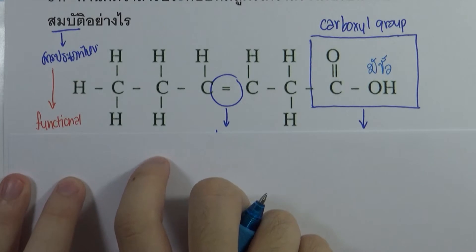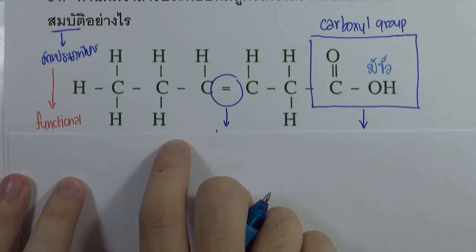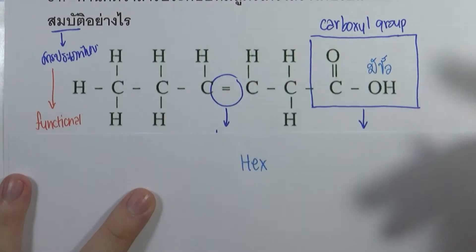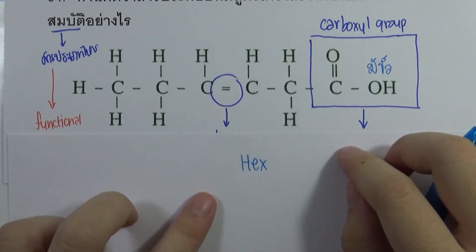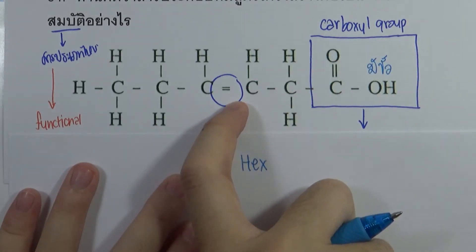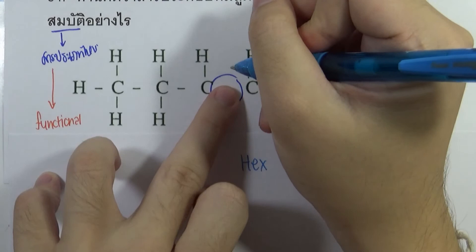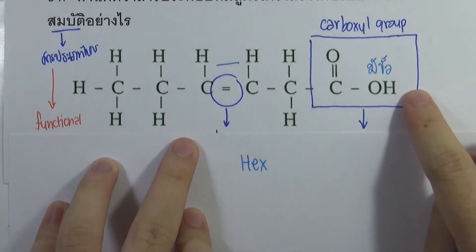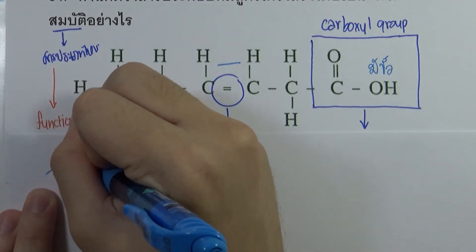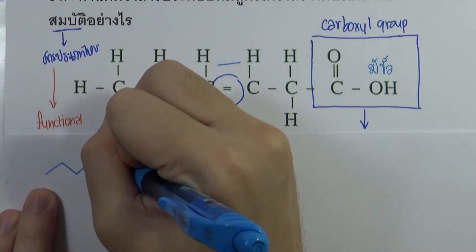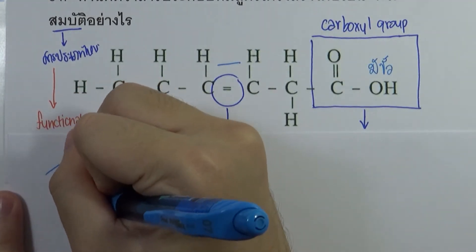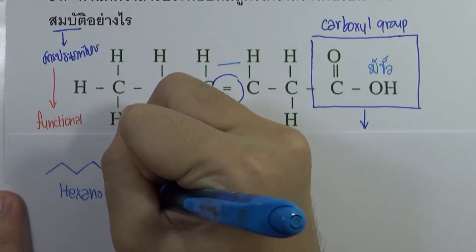We don't have the side chain. It will be HEX because there are 6 carbon pieces. It has to be HEXC — because it is the HECC. If you look at this one — Hexanoic Acid. If you say 1, 2, 3, 4, 5, 6, and it is like this, it will be Hexanoic Acid.